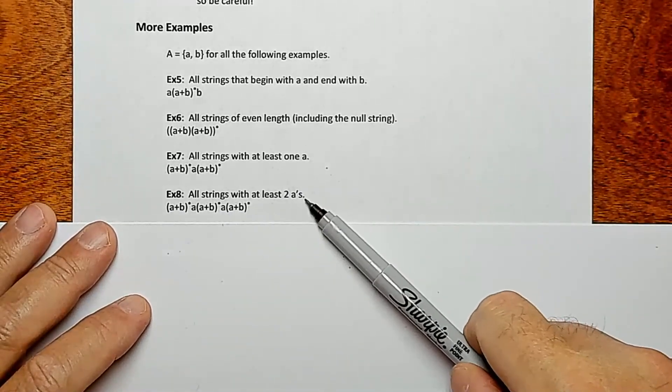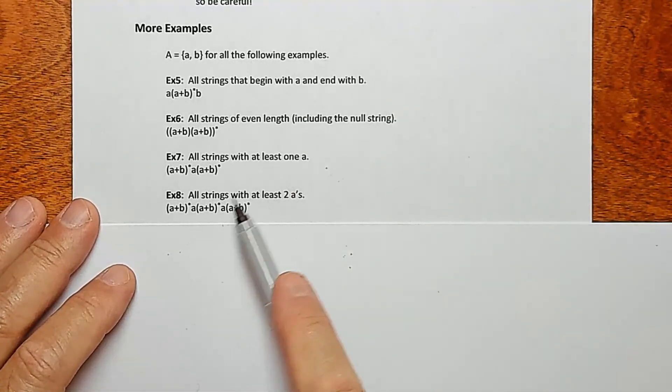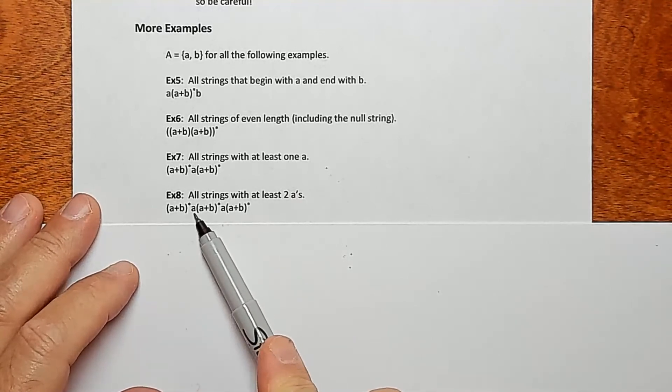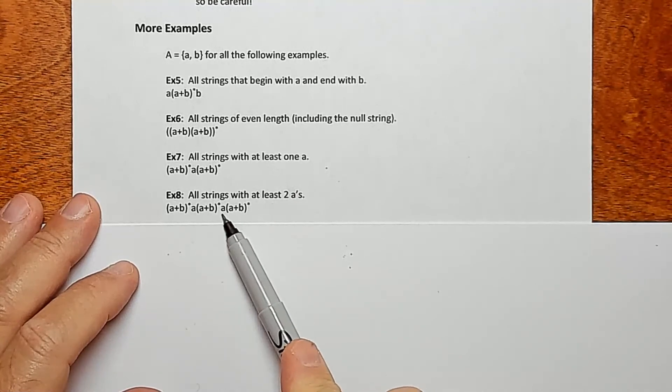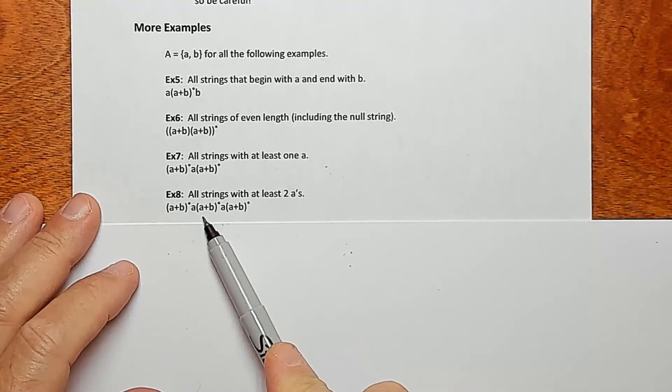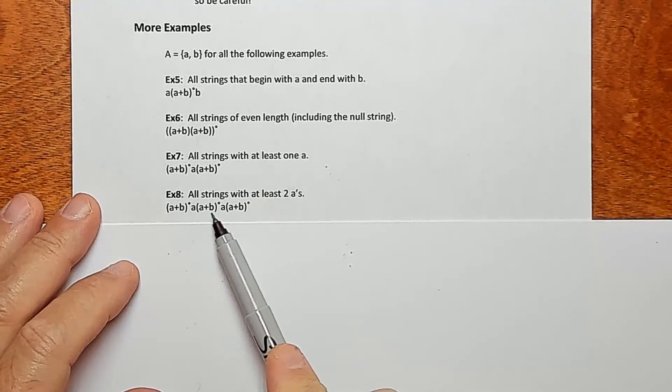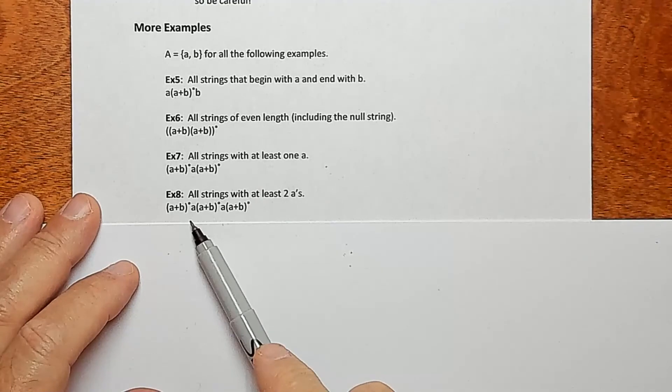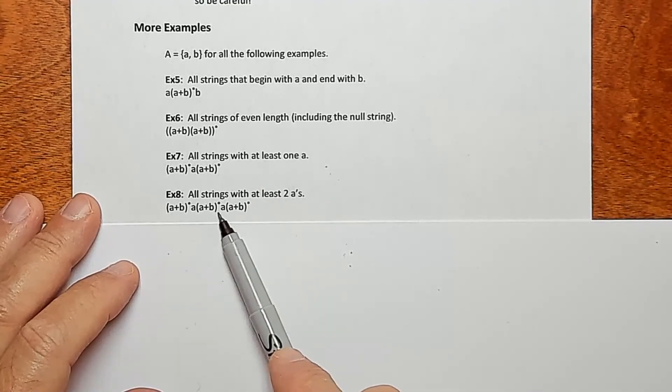Okay, what about all strings with at least two A's? Well, this isn't a particularly elegant solution, but it will work. You know, you want an A and then we want another A. So we list explicitly the A's. Then anything, anything, anything. You know, anything at the front, anything in the middle, anything at the end. So you could create any strings you want and you're guaranteed to have at least these two A's.